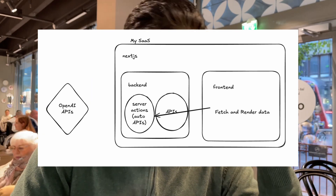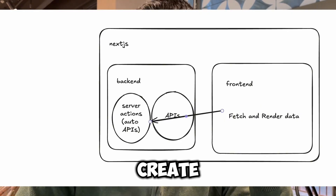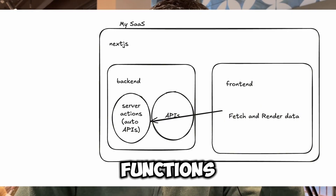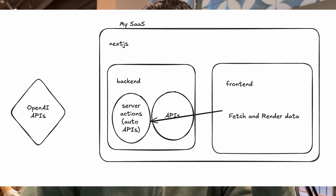The usual way is to create a couple of APIs in the backend to handle the business logic — like communicating with OpenAI services — and then call those custom APIs from the frontend. But using server actions in Next.js, I just need to create some functions and then use those functions in the frontend components. And that's it.